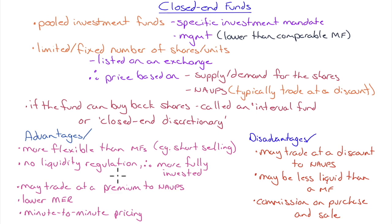No liquidity regulation means a closed-end fund is more fully invested — a mutual fund must keep about 5% in cash to meet redemptions, but a closed-end fund can put 100% of its money to work. Other advantages: may trade at a premium to NAV, lower management expense ratios, and minute-to-minute pricing. Disadvantages: may trade at a discount, possibly less liquid than a mutual fund despite being exchange-traded since low daily volume may prevent full execution, and trading commissions apply on buys and sells.